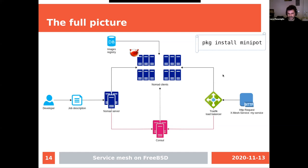This exact infrastructure is available as a single port called minipot — a single-node implementation of everything shown. It installs all dependencies and configures Nomad, Consul, and Traefik to work together. If you want to try it, minipot provides an easy way to do so.